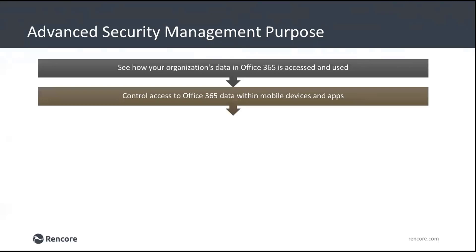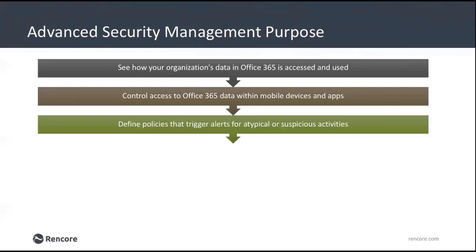ASM also allows us to control access to Office 365 data on mobile devices. In a world where everybody has a cell phone, tablet, or mobile device and wants data on the move, controlling who can do that, how often, and whether it's encrypted is an important part of security management. We also have the ability to define policies that trigger alerts for atypical or suspicious activities — for example a suspicious logon or what's called an impossible logon, where you log in from one country and then a minute later log in from an impossible location.